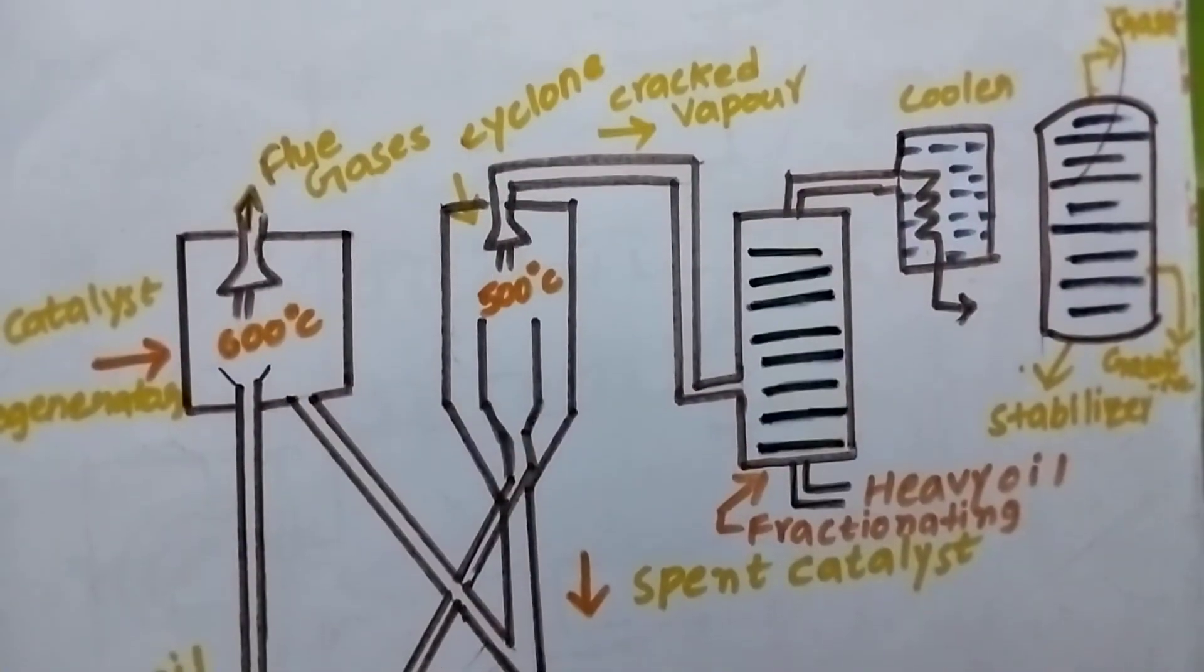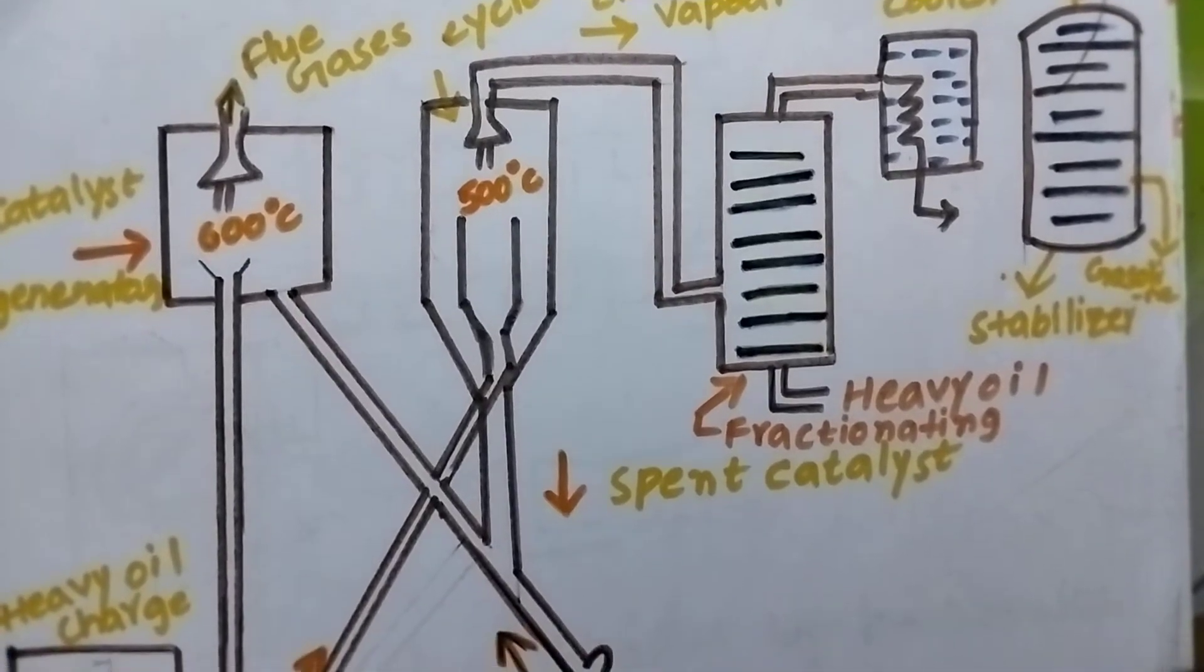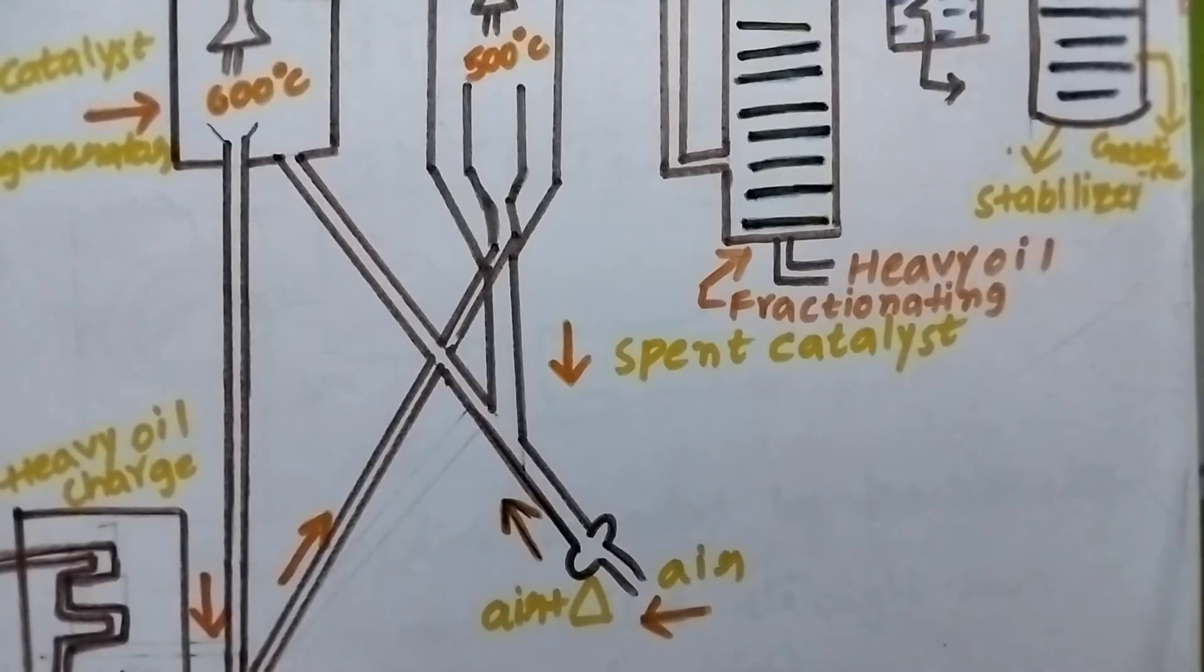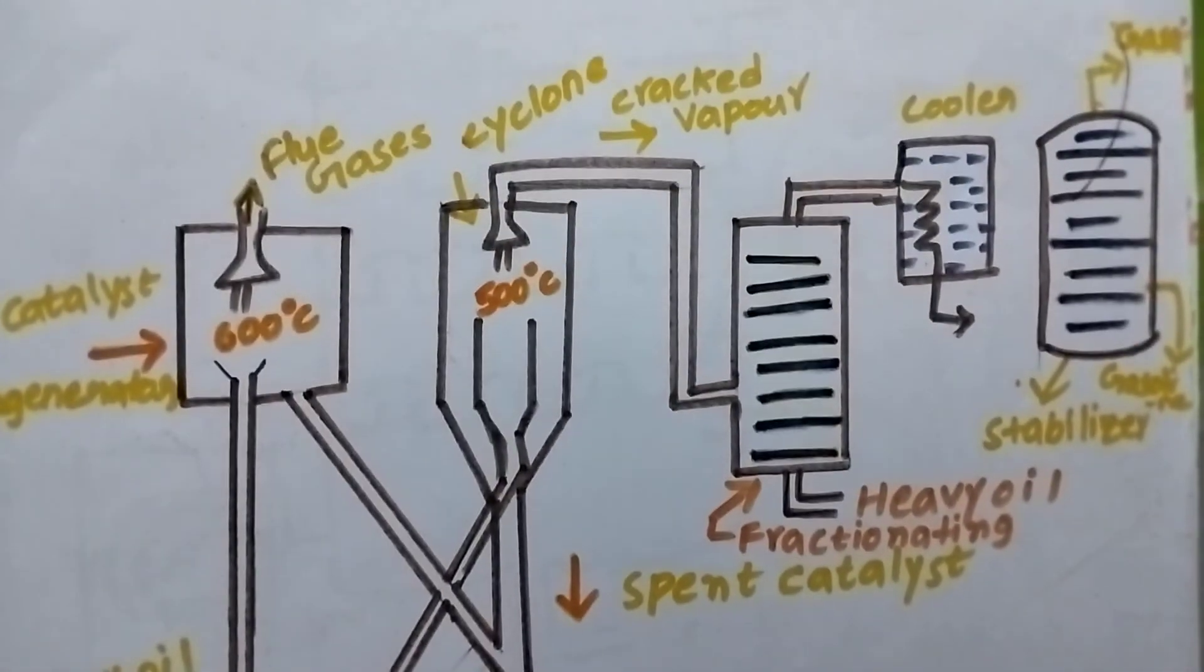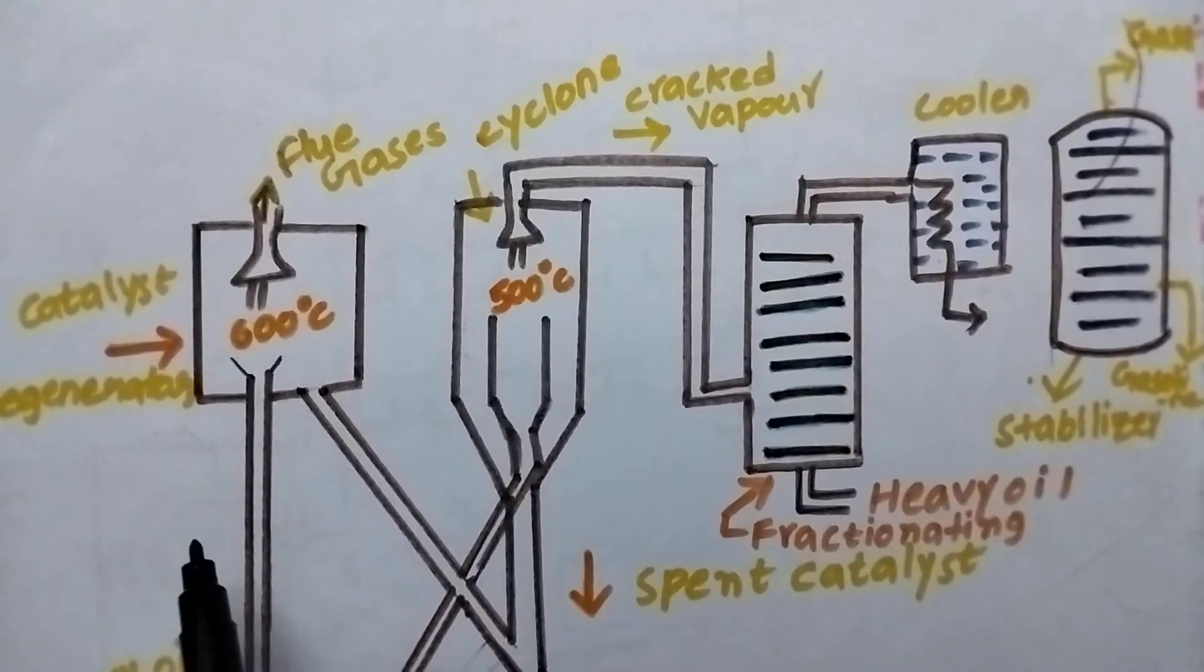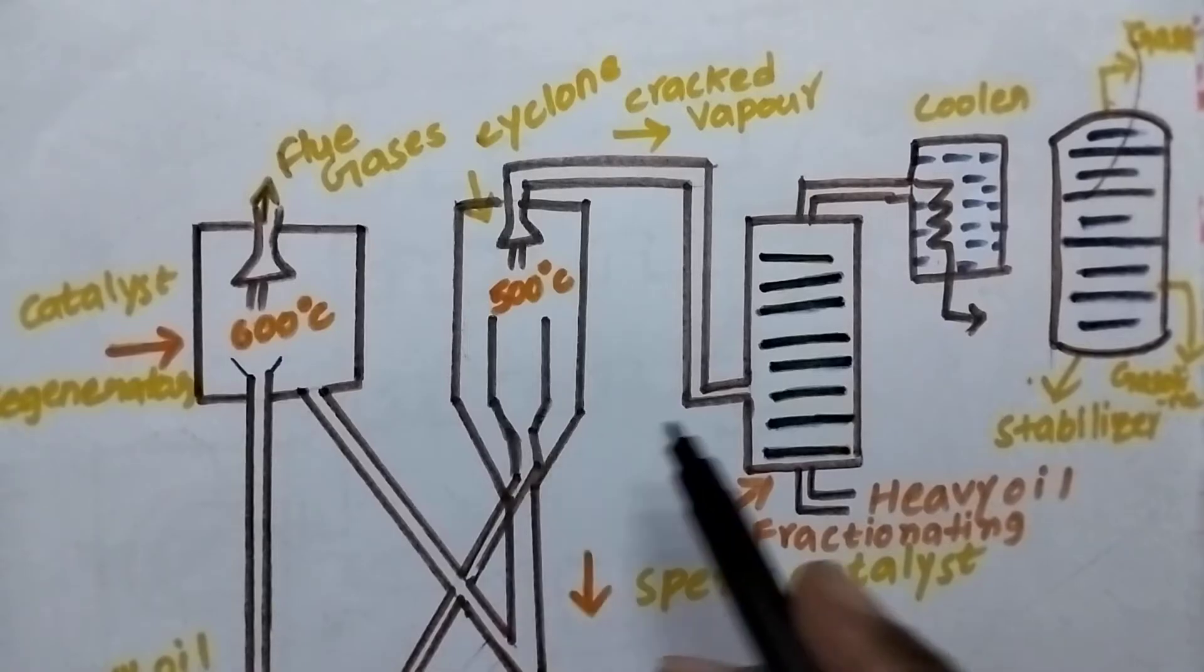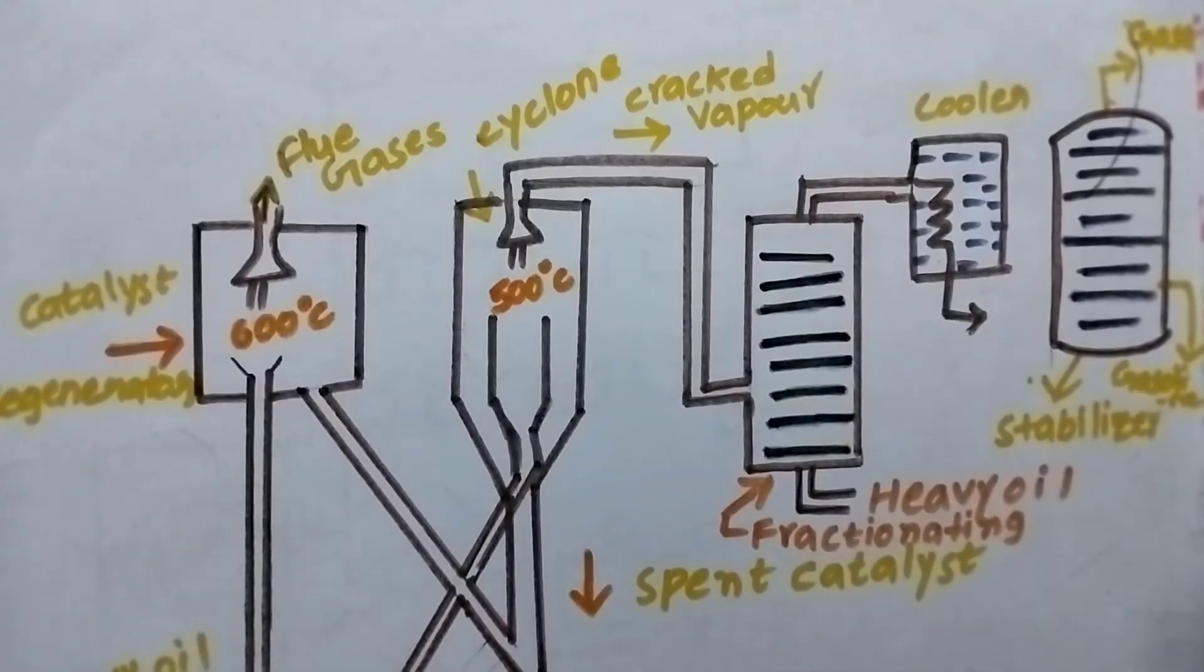Coming to the apparatus used for moving bed catalytic cracking, it consists of a preheater where the heavy oil is heated to very high temperature and converted into vapor state. It includes a catalyst regenerator chamber followed by the catalyst chamber, called the reactor, followed by fractionating column, cooler, and stabilizer.